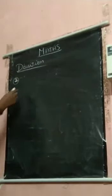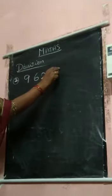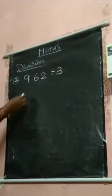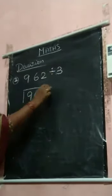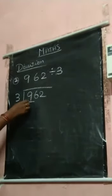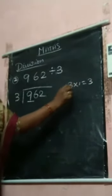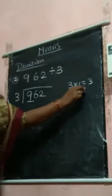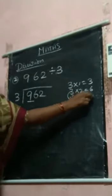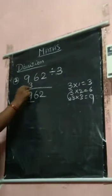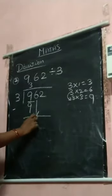Next sum: 962 divide by 3. You take 9. 9 is bigger than 3, so you start from 1. 3 1's are 3, this is small. 3 2's are 6, this is also smaller than 9, so go down. 3 3's are 9. 9 minus 9 is 0. So you bring down this 6.